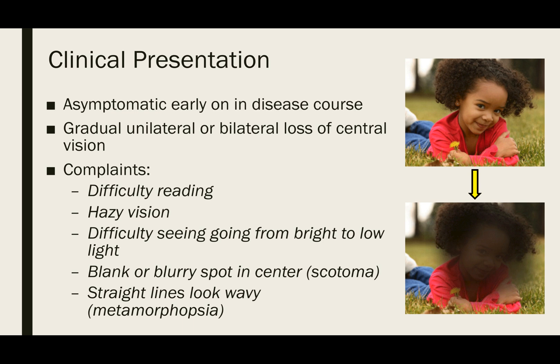So far we've discussed the macular changes that aging individuals and those with AMD may experience. How does this translate into the clinical picture? People with early AMD will usually be asymptomatic, with normal or near-normal vision and minimal metamorphopsia or visual distortion. Visual acuity may still be unaffected or minimally affected in intermediate AMD. As the disease continues to progress, patients may complain of gradual unilateral or bilateral central vision loss that manifests as difficulty reading, needing brighter lighting for tasks requiring fine visual acuity, and having central scotomas or blind spots.